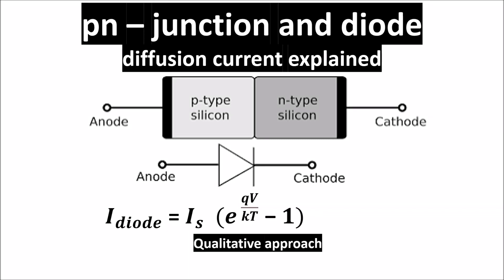In this video, we see the physics of p-n junction and we explain the diode working principle. Following us, we will understand diode diffusion current in a deep and qualitative way.